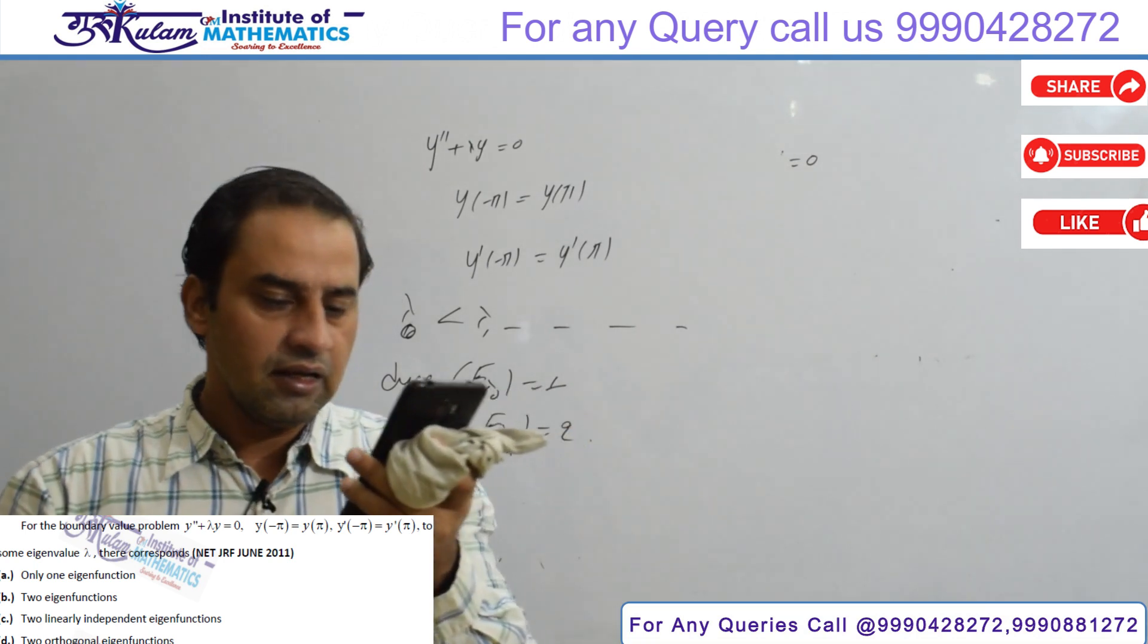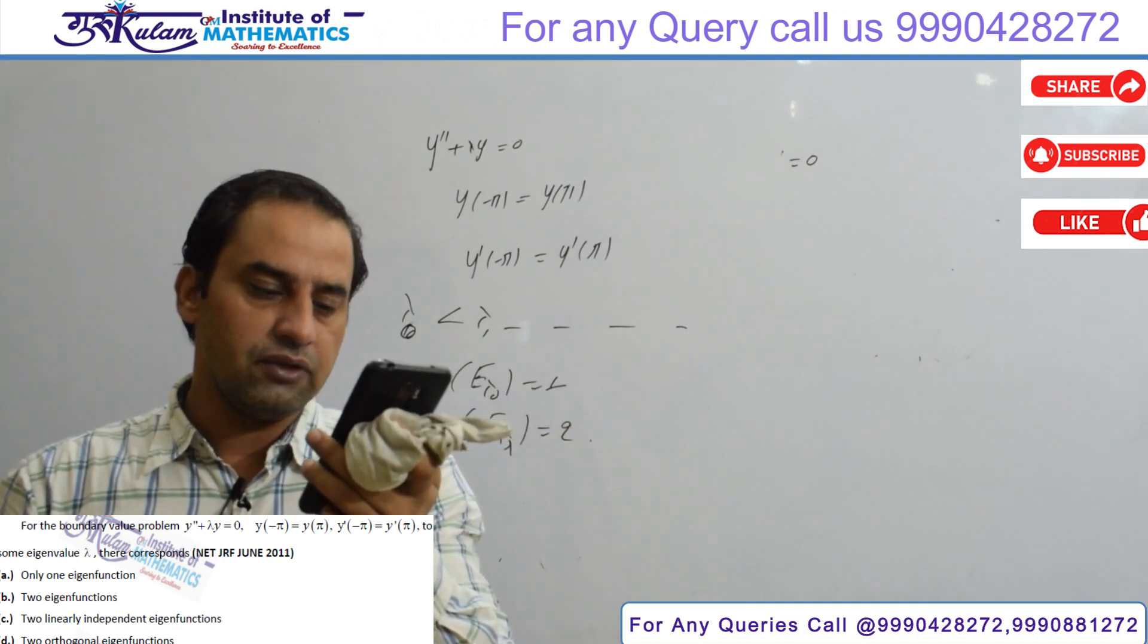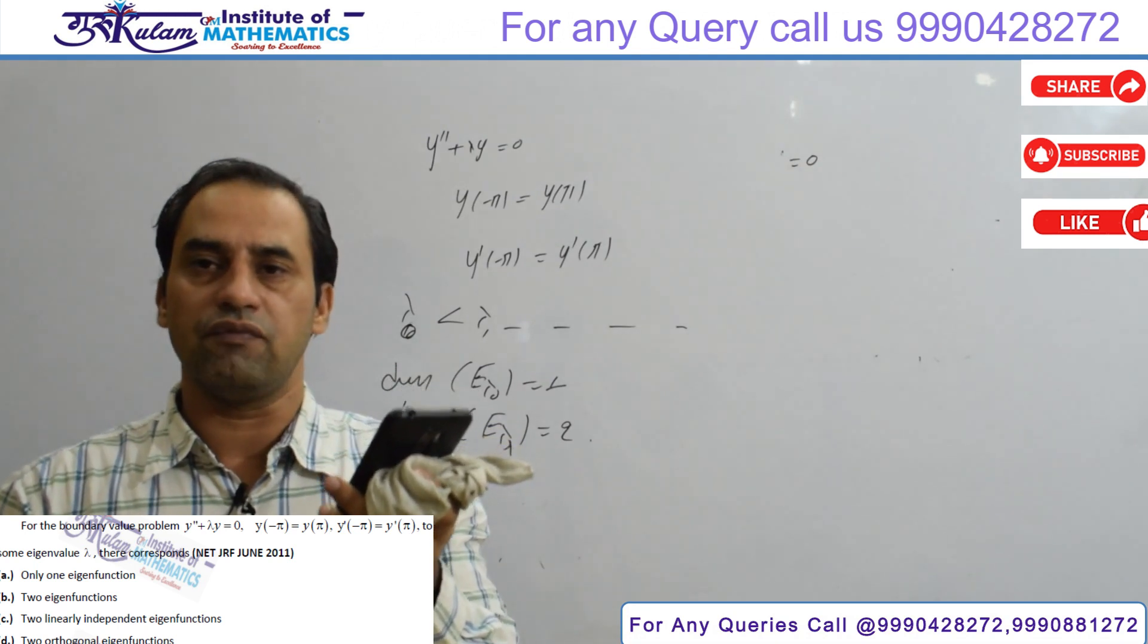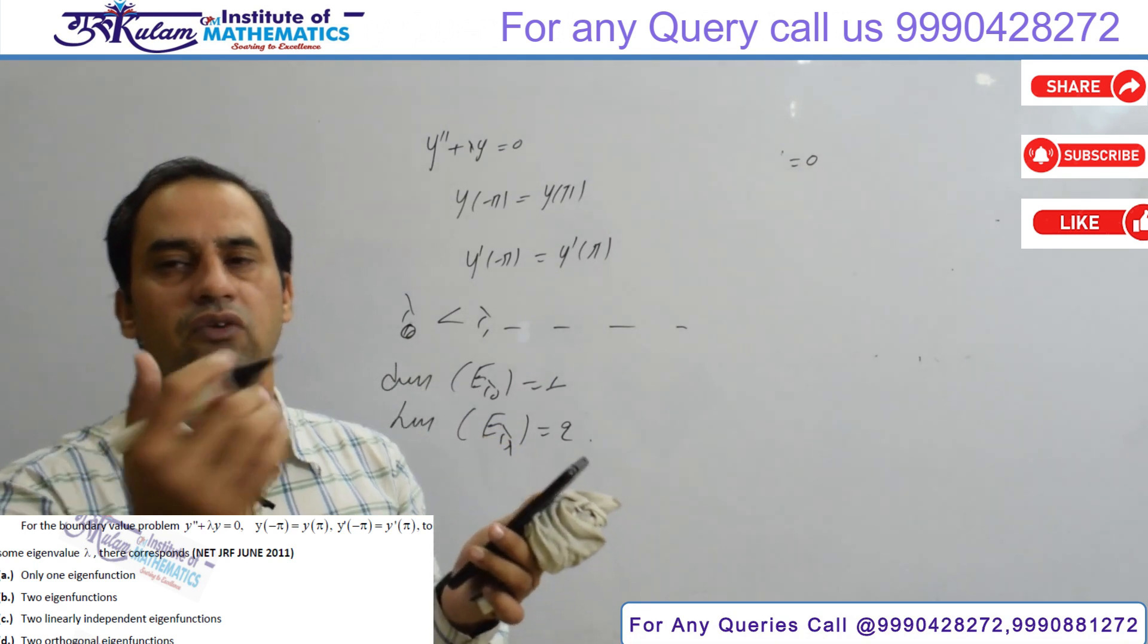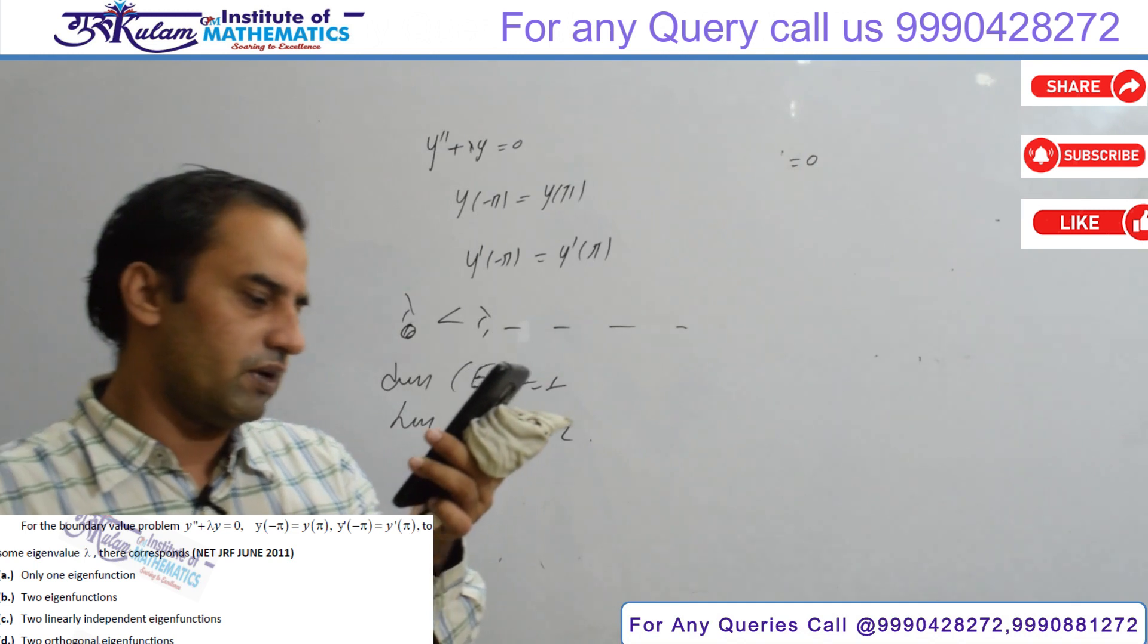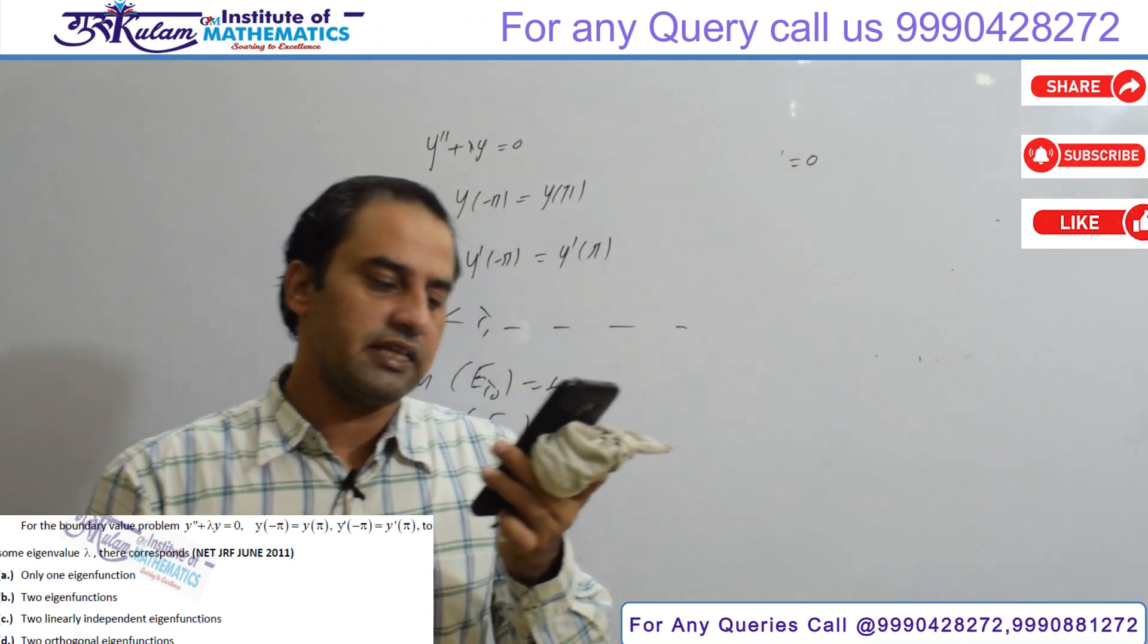Here I am saying that to some eigenvalue there is only one eigenfunction. This is not possible. Every eigenvalue corresponding eigenfunction is infinite. So first is false. Similarly, second is false.